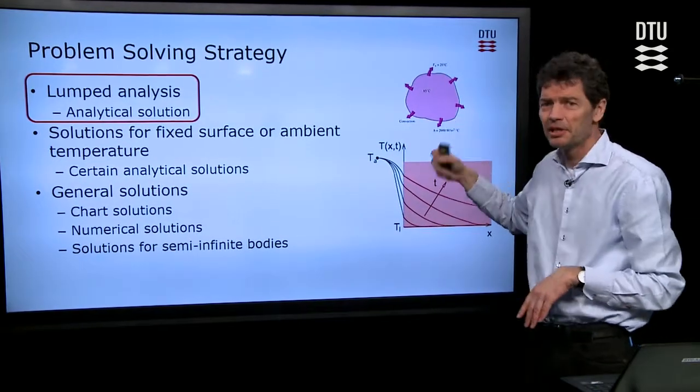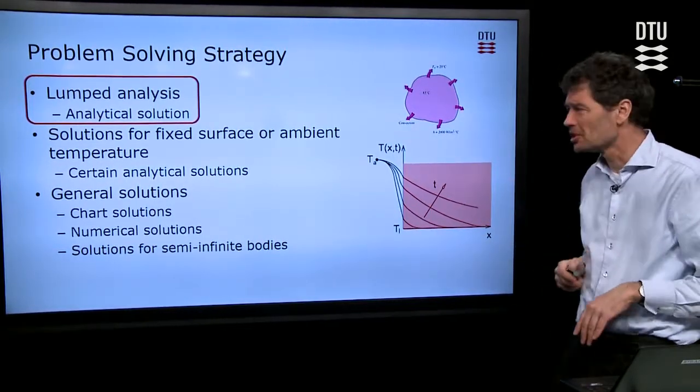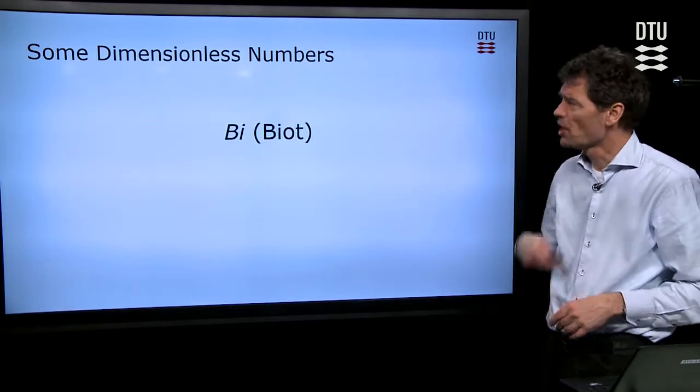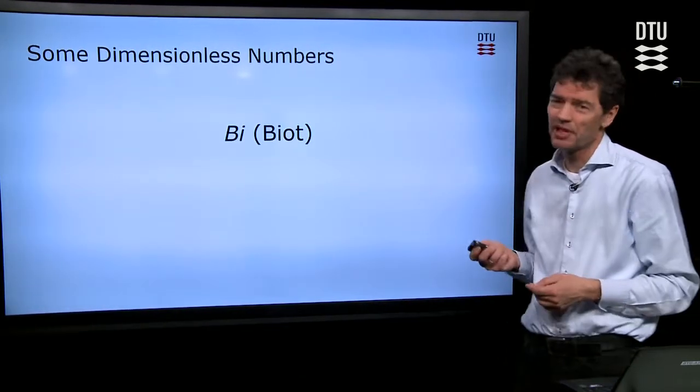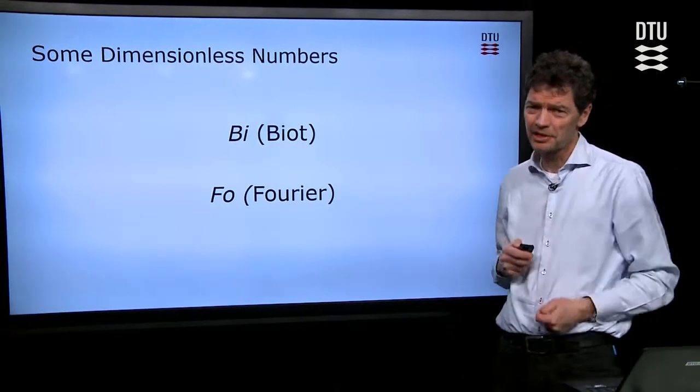For this lecture, we focus only on the lump - one piece of material, one temperature within the material. But how does that temperature develop over time? We need some more numbers: the Biot number and the Fourier number.